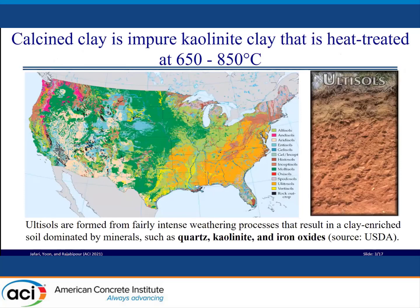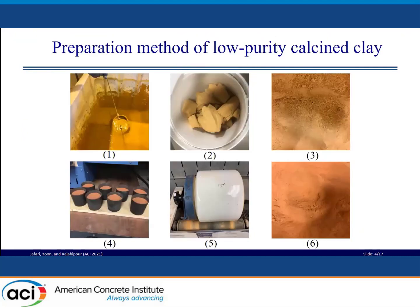Calcined clay is impure kaolinite clay that is heat treated at a temperature between 650°C to 850°C. The majority of kaolinite deposits in the world are mixed clays and contain other minerals such as quartz and hematite. Kaolinite is a common mineral in soil and is abundant in more weathered soils such as ultisols. In this presentation, we look at two clay sources that are byproducts of aggregate processing. The aggregate producer needs to wash the aggregates after crushing them to reduce fine particles, and this practice results in waste slurry. Two low purity clay samples were obtained from a sand and gravel pit in Maryland, and we believe this waste slurry primarily includes clay minerals. Clay number one was directly sent from the washout line, whereas clay number two was excavated from storage ponds where it had been kept for a few years.